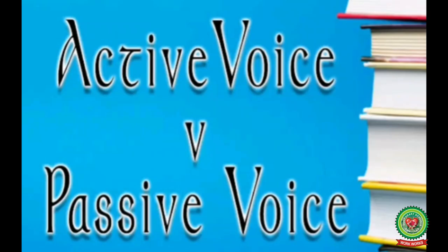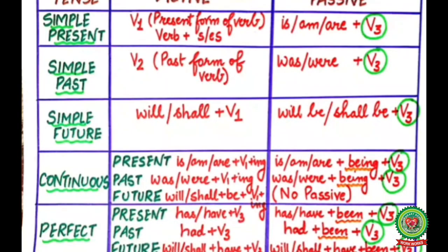Good morning students. Till now we have discussed active and passive voice rules for simple present, simple past, simple future, and continuous tense. Now in this video we will discuss the rules for perfect tense as well as some miscellaneous rules of active and passive voice.